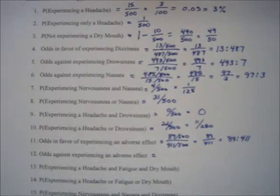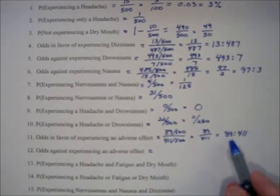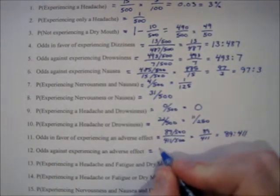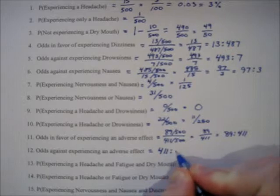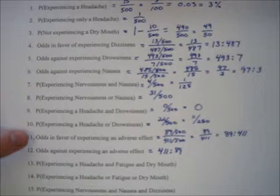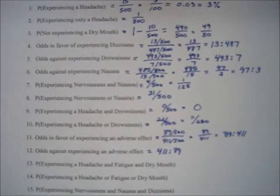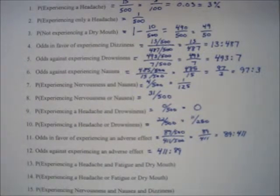Problem 12: odds against experiencing an adverse effect. If you already know the odds in favor, calculating the odds against is easy — just reverse the positions. So it's 411 to 89. Anytime you calculate odds in favor and then odds against, all you do is flip the two numbers.